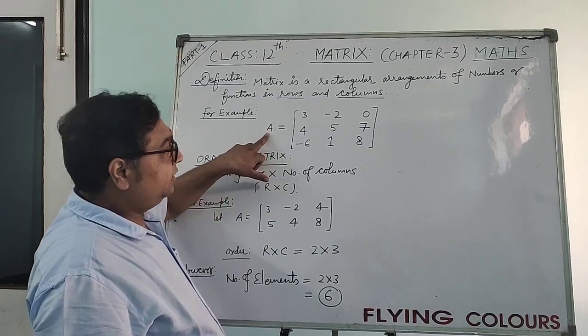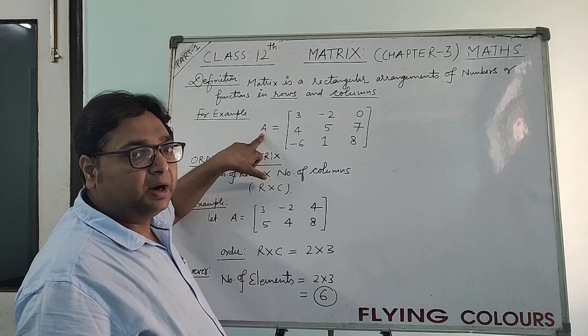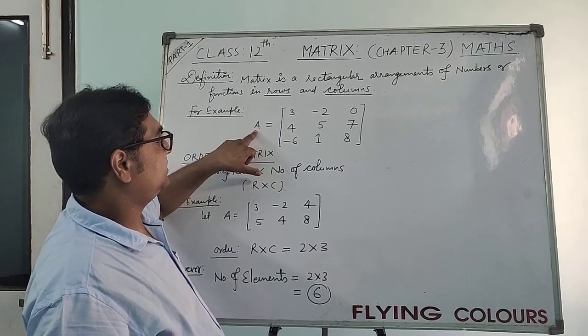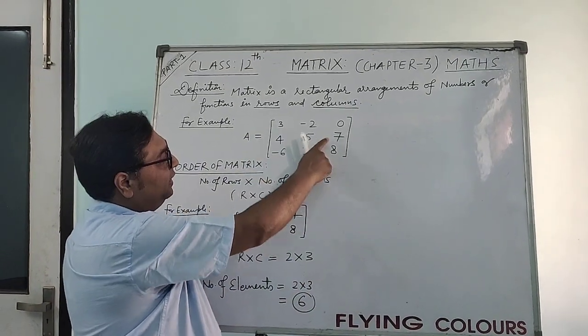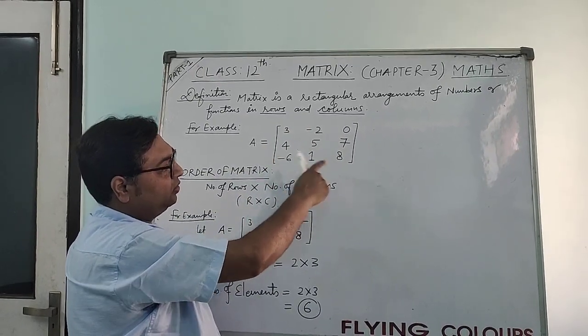What is A here? Wherever we are writing any capital letters in matrix, the capital letters always represent a particular matrix. So here, as you can see, I am entering the data in this square bracket in terms of rows and columns.